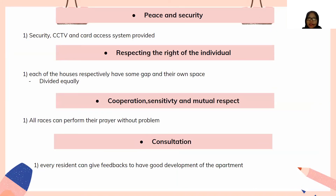The apartment provides security and a crisis management system. For individual rights, each house has its own allocated space divided proportionally based on what residents can afford. For cooperation and mutual respect: residents of many different races live in the apartment and can practice their beliefs without problem, as long as they do not interrupt others or engage in racist behavior. For consultation, every resident can give feedback to support good development of the apartment.